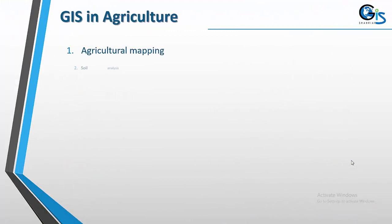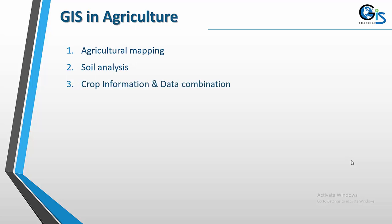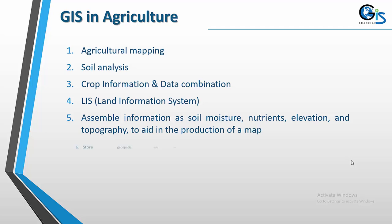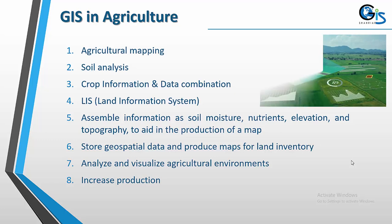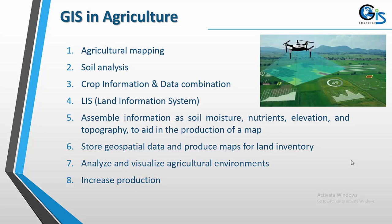In the agriculture sector, GIS is being used for agriculture mapping, soil analysis, crop information, and data combination. The Land Information System (LIS) assembles information such as soil moisture, nutrients, elevation, and topography to aid in map production, store geospatial data, visualize the agricultural environment, and increase production by combining all of this information.